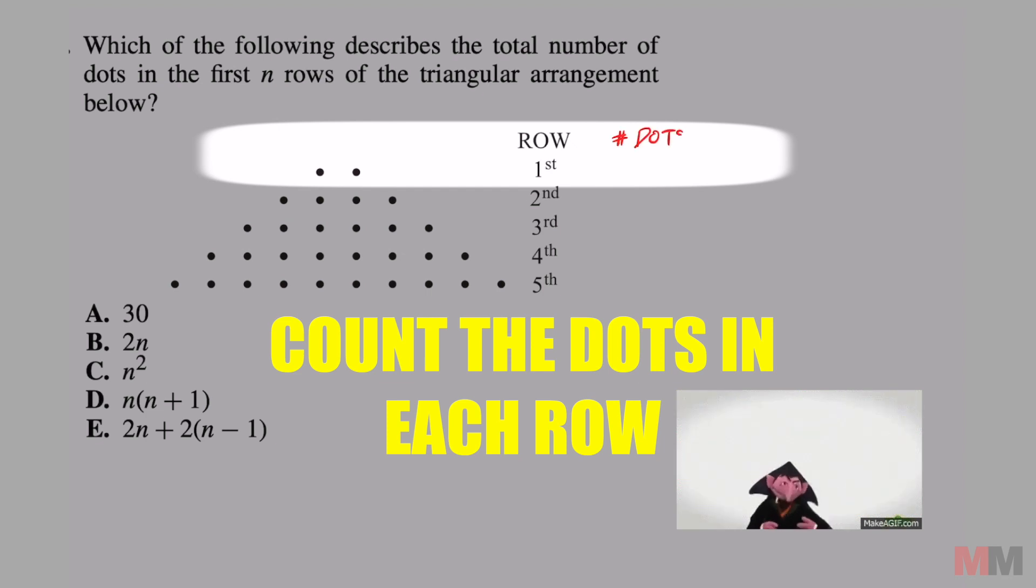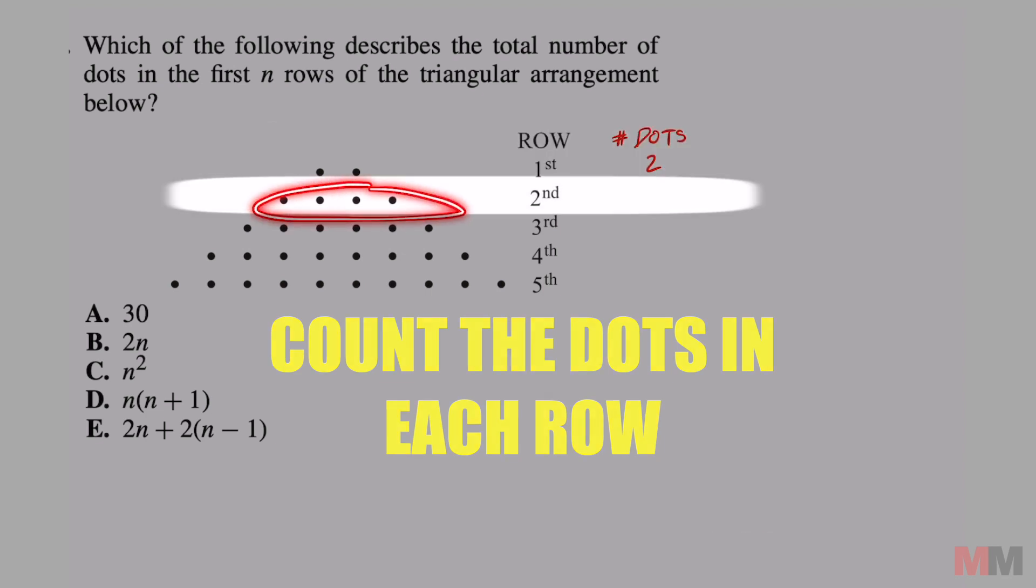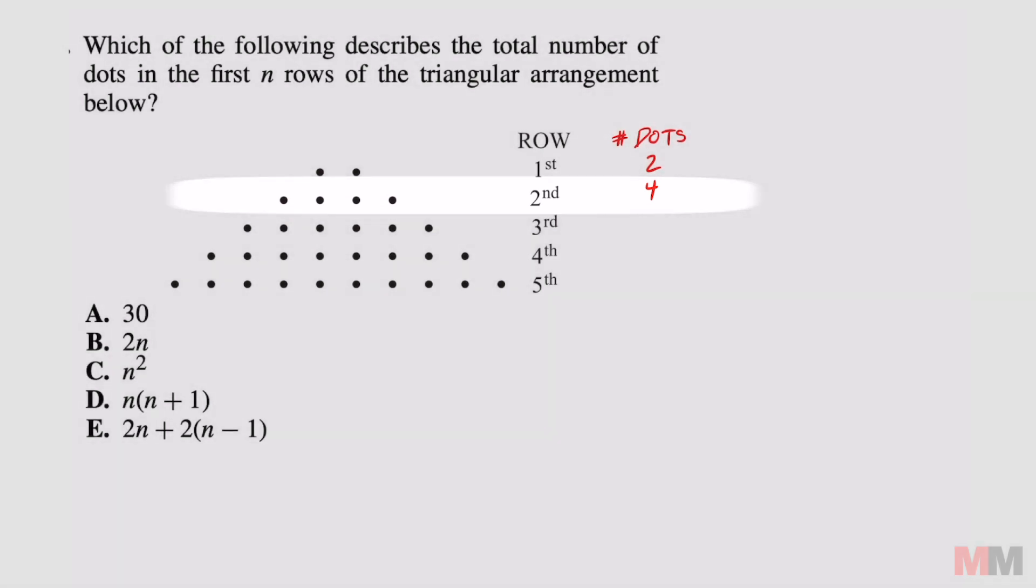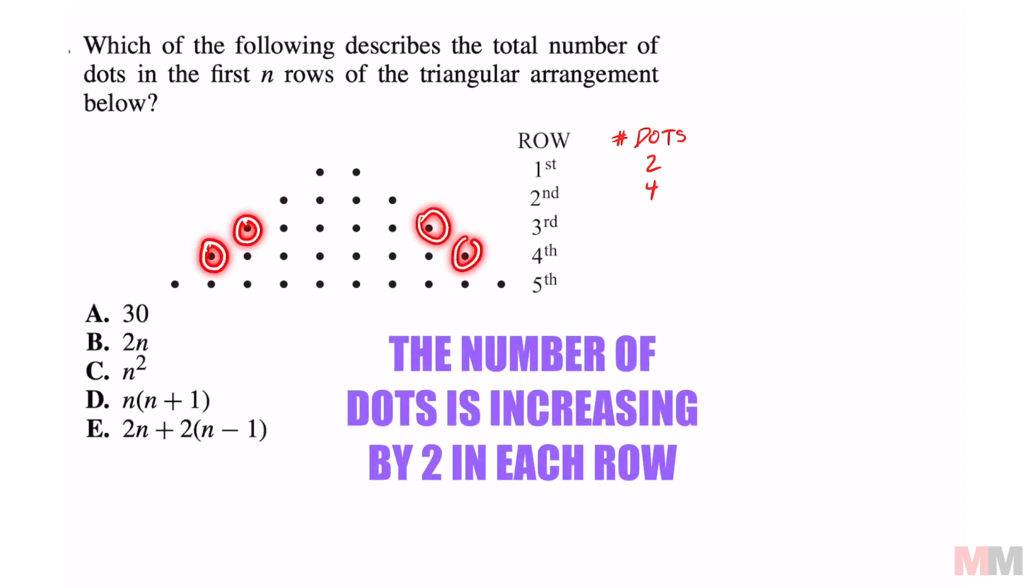In the first row, there are two. Second row, if you count all the dots, there are four. A faster way to see what's going on in this triangular pattern is to look at the endpoints. Each time,